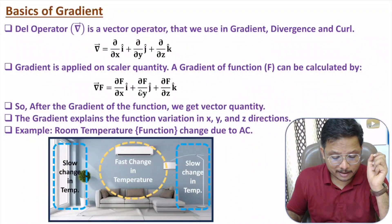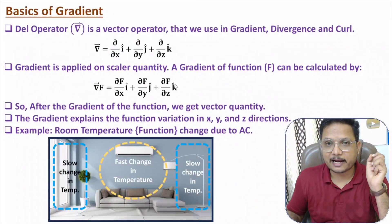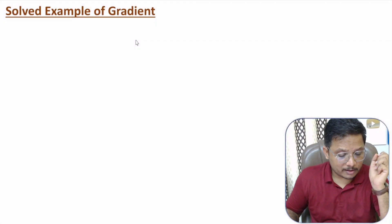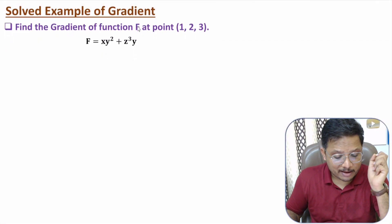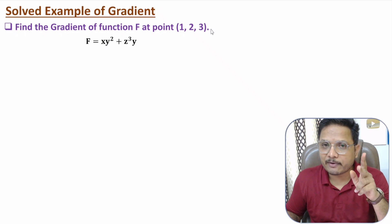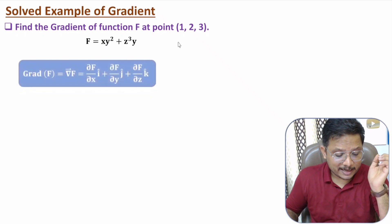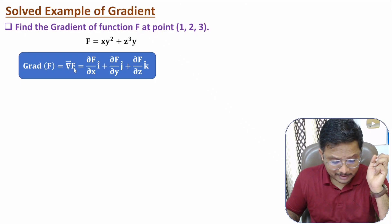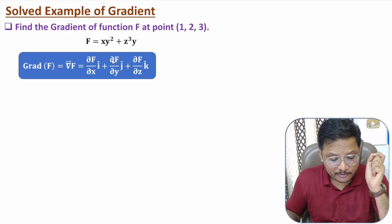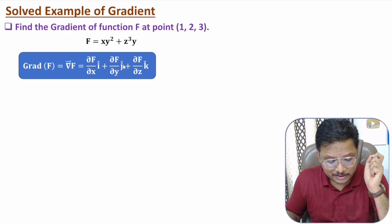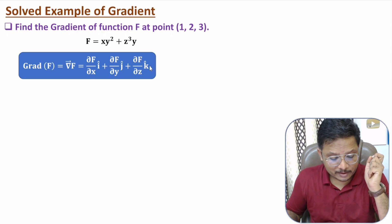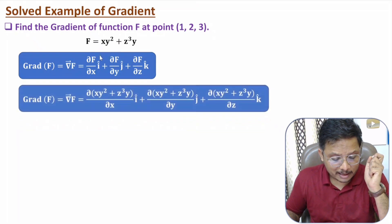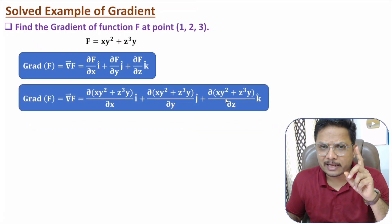X direction means I, Y direction means J, and Z direction means K. Now I will solve one problem. We have a function F and we need to identify the gradient of this function at a given point. Gradient is del F: partial differentiation of F with respect to X in the I direction, plus with respect to Y in the J direction, plus with respect to Z in the K direction.